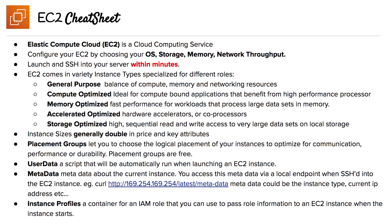EC2 comes in a variety of instance types specialized for different roles. General purpose offers a balance of compute, memory, and network resources. Compute optimized gives you more computing power, ideal for compute-bound applications that benefit from high performance processors. Memory optimized offers fast performance for workloads that process large data sets in memory. Accelerated optimized uses hardware accelerators or co-processors. Storage optimized provides high sequential read and write access to very large data sets on local storage.